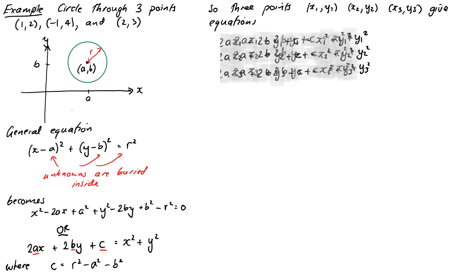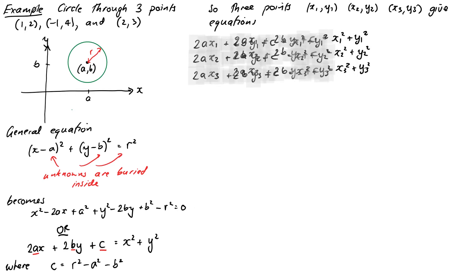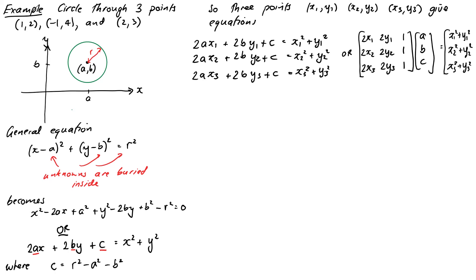So let's make it even clearer by putting it in matrix form. We'll get 2x1, 2y1, 1 on the first row of the coefficient matrix. We'll get 2x2, 2y2, 1 on the second row. We'll get 2x3, 2y3, 1 on the third and that's all times a, b, c equals x1 squared plus y1 squared, x2 squared plus y2 squared and x3 squared plus y3 squared on the right hand side.